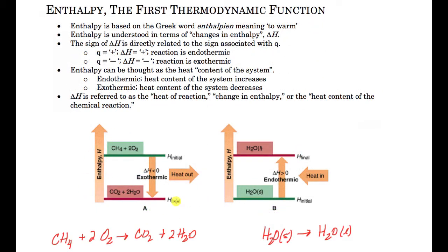Looking at the diagrams, we can see enthalpy increasing as we go up. The green and red lines represent reactants and products. The arrow points down toward the products, so it starts as methane and oxygen and produces CO2 and water. This is a combustion reaction, and combustion reactions produce heat — heat is released. This is an exothermic reaction, so we see a decrease in enthalpy.